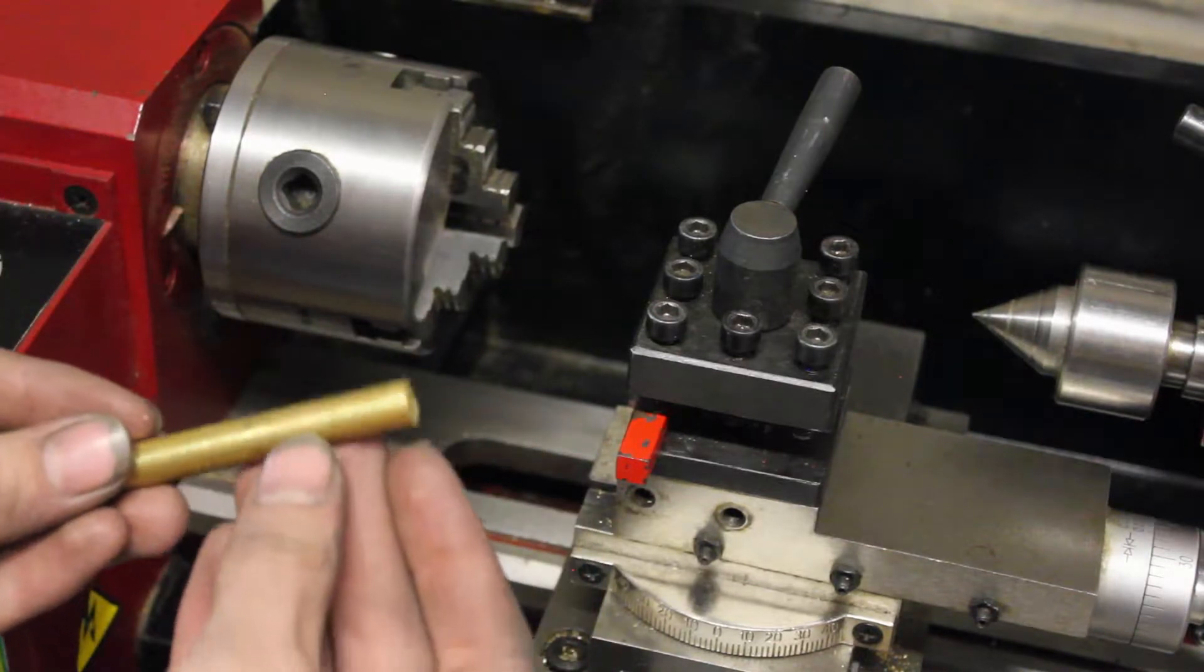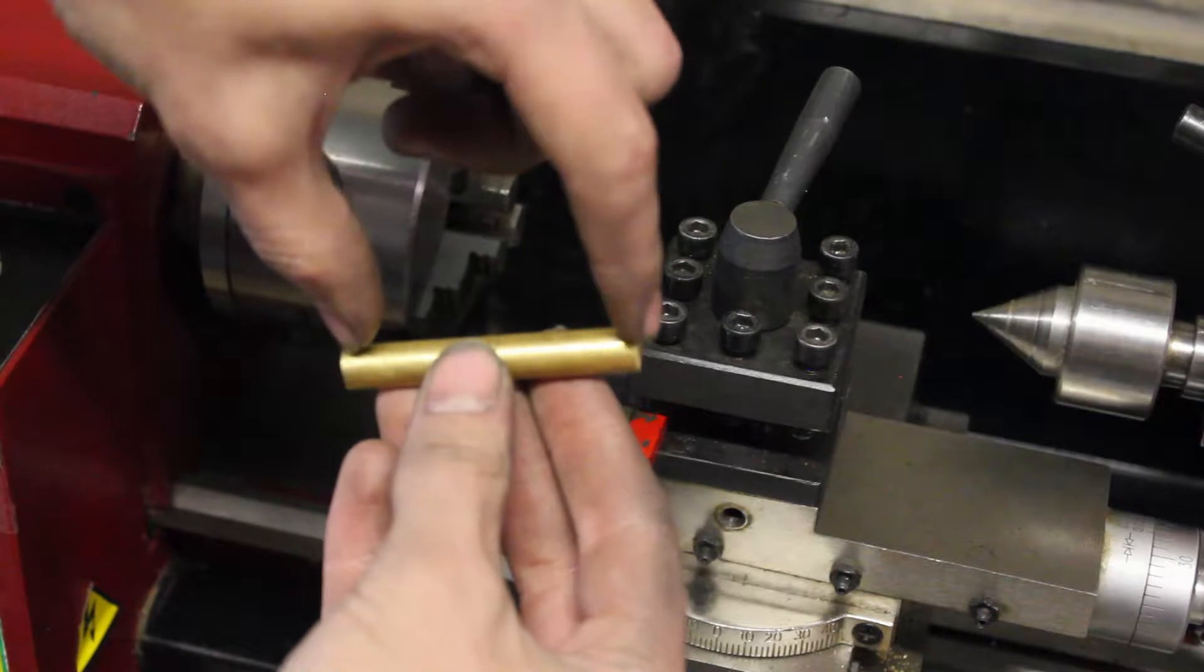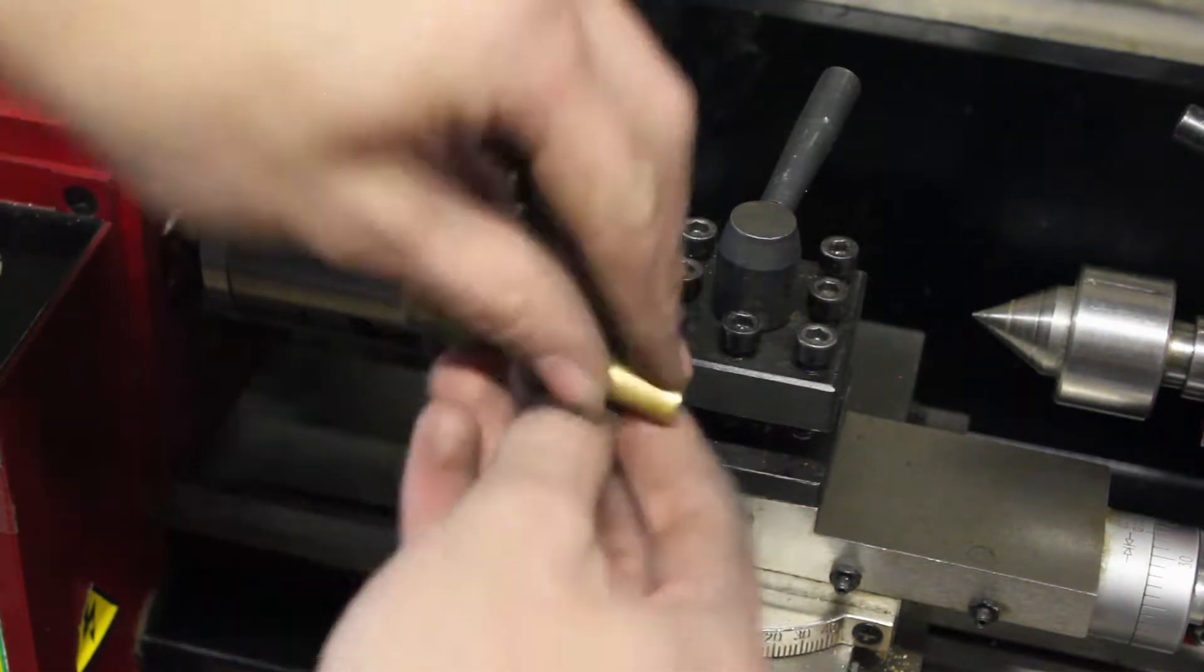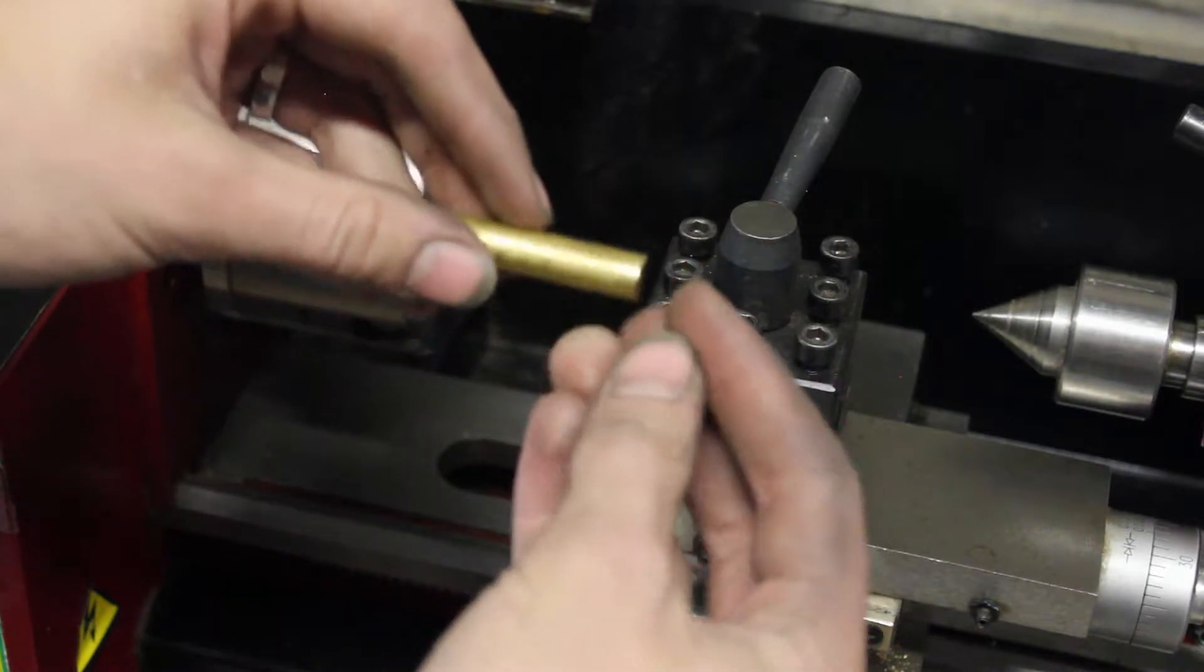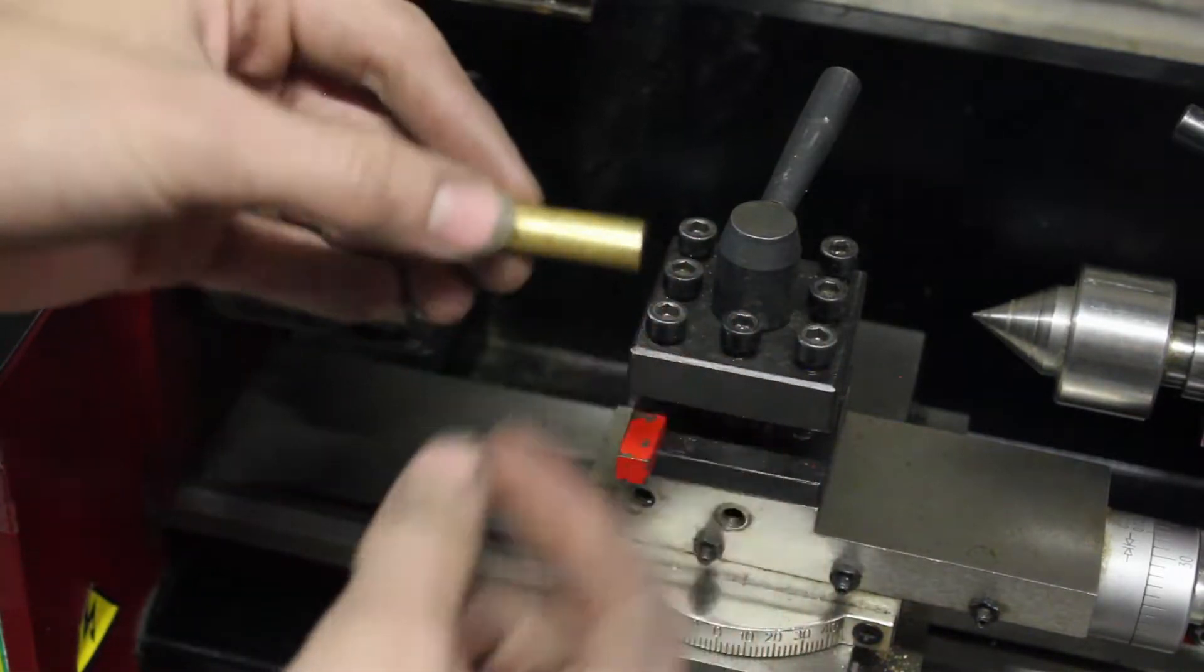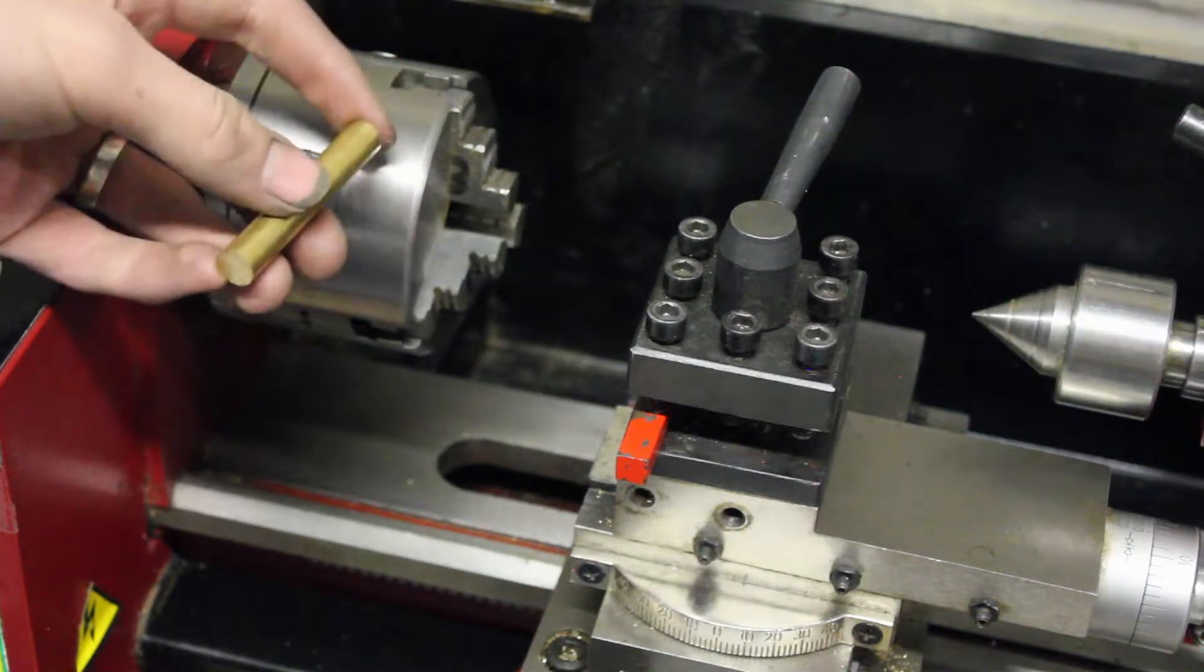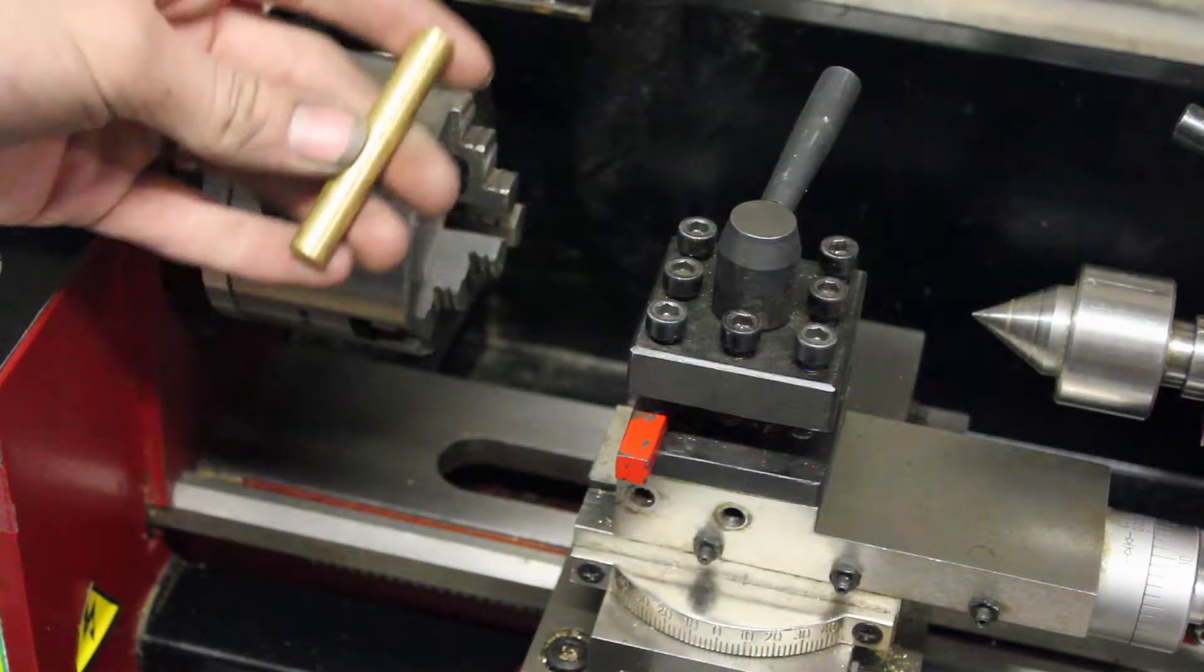And also, when you're facing, you can make your part to size. So if you want this to be, say, two inches long, then you would face this end off, turn it around, and then face this end until it's the right size. So facing your part is good for making it smooth, making it square, and making it to size.